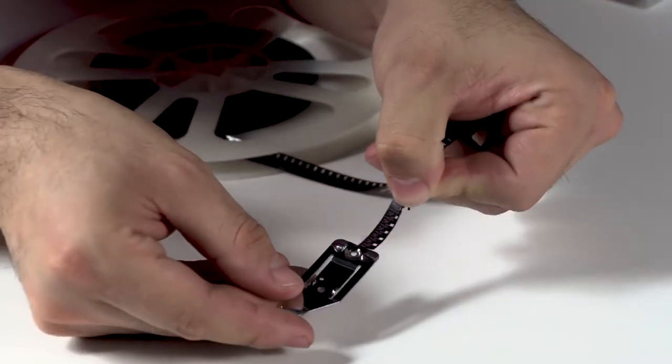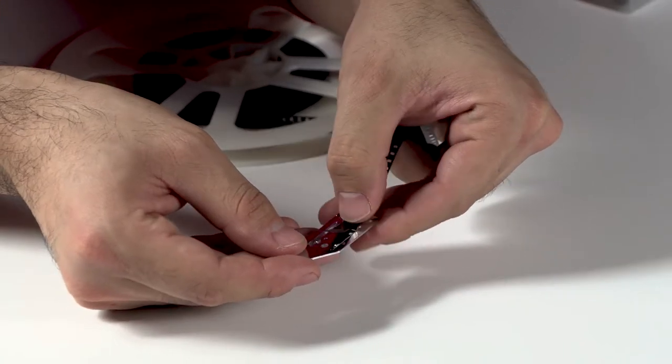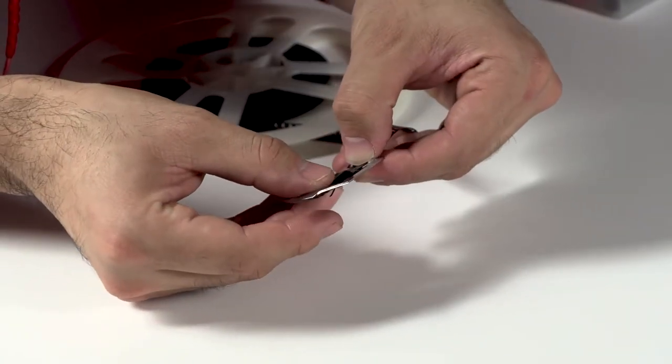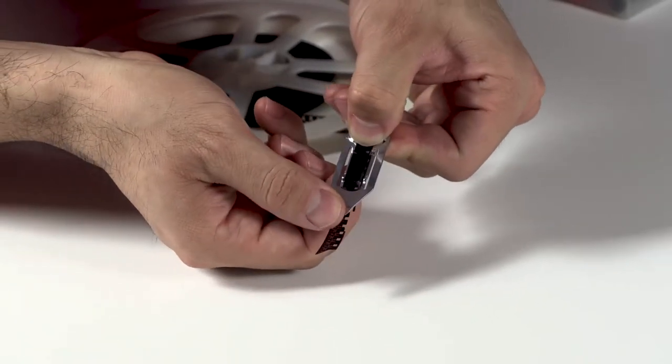If your film is frayed and looks like this on the end, you need to round the edge to make it playable. Use the provided cutter to round the edge in between divots to prepare it for the projector.